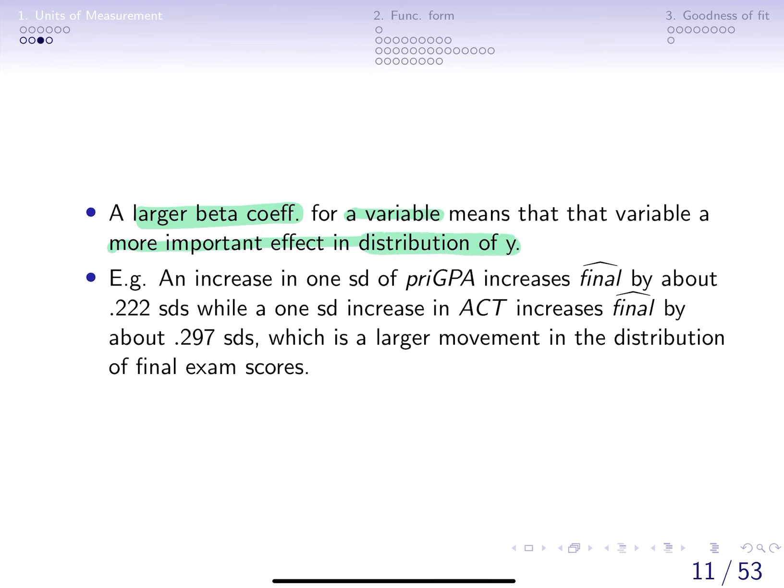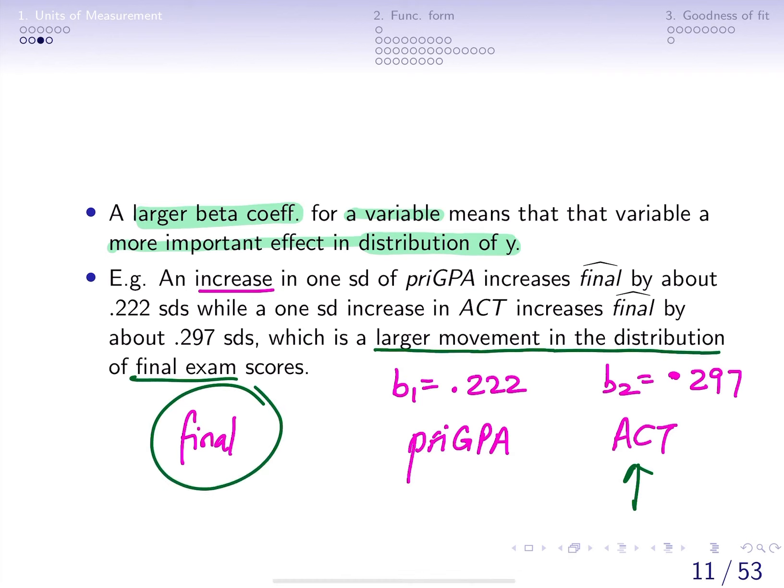A larger beta coefficient for a variable means that that variable has a more important effect on the distribution of y or on the variation of y. Let's take an example: let's say we were trying to predict final exam scores by using data on prior GPA and ACT scores. Let's say that we find that the beta coefficient for prior GPA, b1, is 0.222 and for ACT scores, b2, is 0.297. From this we would be able to infer that ACT scores cause a larger movement in the distribution of final exam scores because b2 is greater than b1.